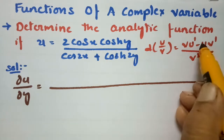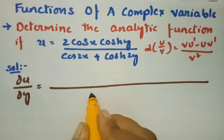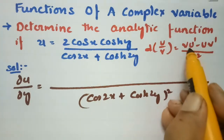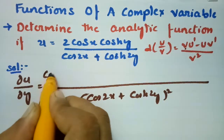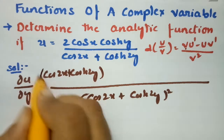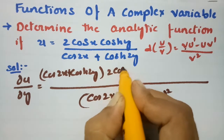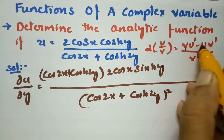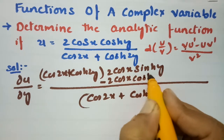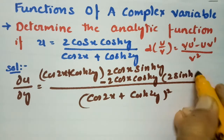So, this is u and this is v, where the numerator is u and the denominator is v. Following the formula, the denominator squared is (cos(2x) + cosh(2y))². Then v times u' gives cos(2x)·cosh(2y) times the derivative of cosh(y) with respect to y, which is sinh(y), giving 2cos(x)·sinh(y). Minus u times v', that is 2cos(x)·cosh(y) times the derivative with respect to y, which is 2sinh(2y).